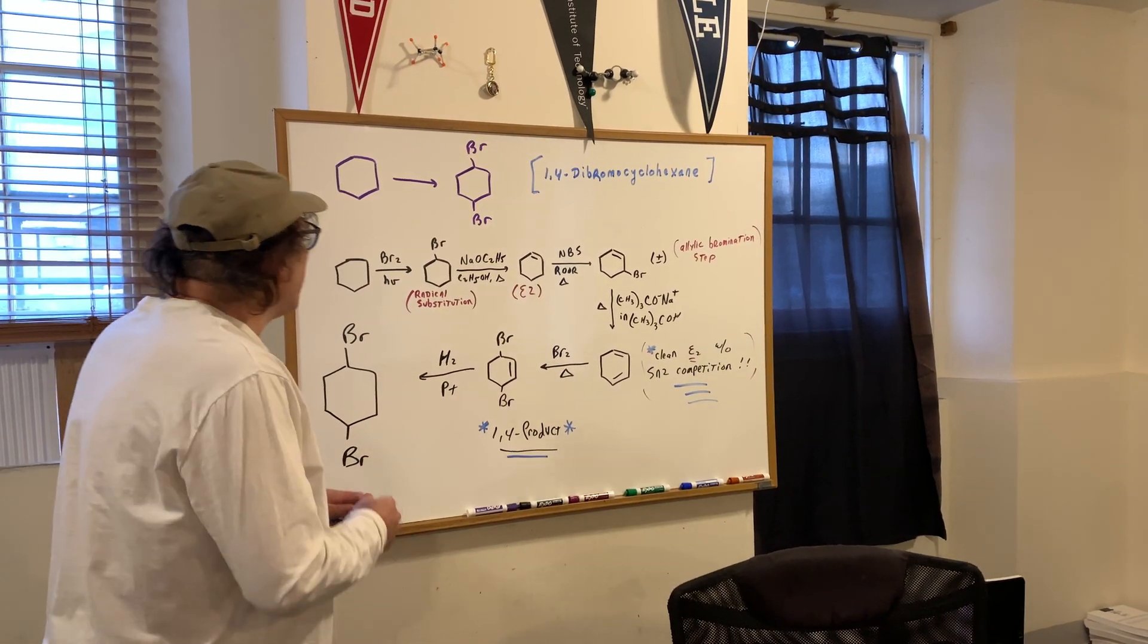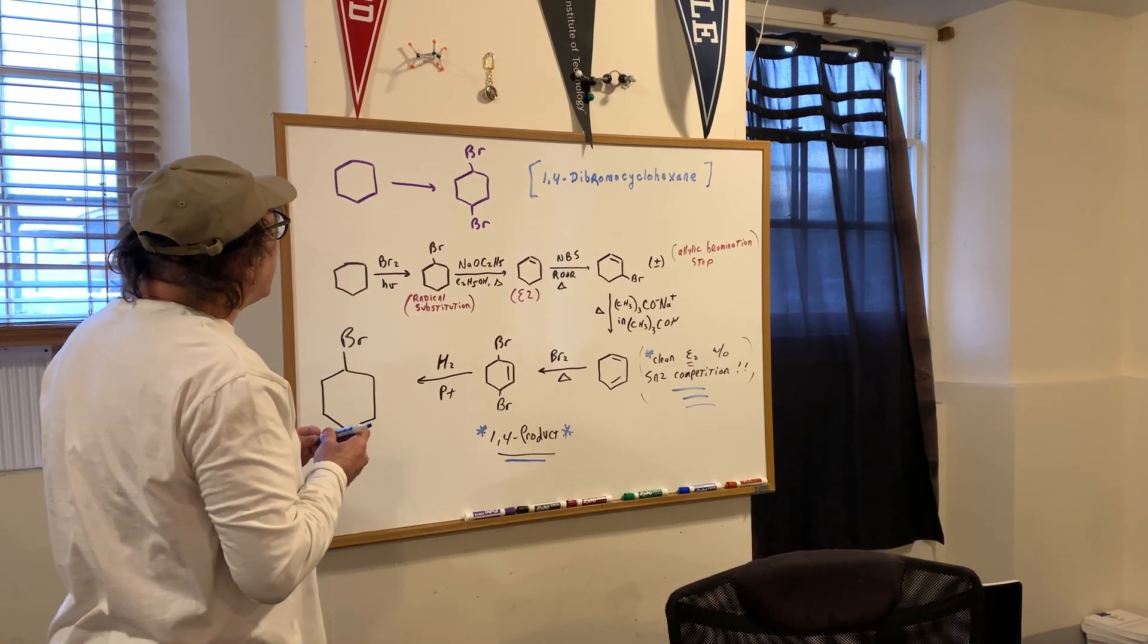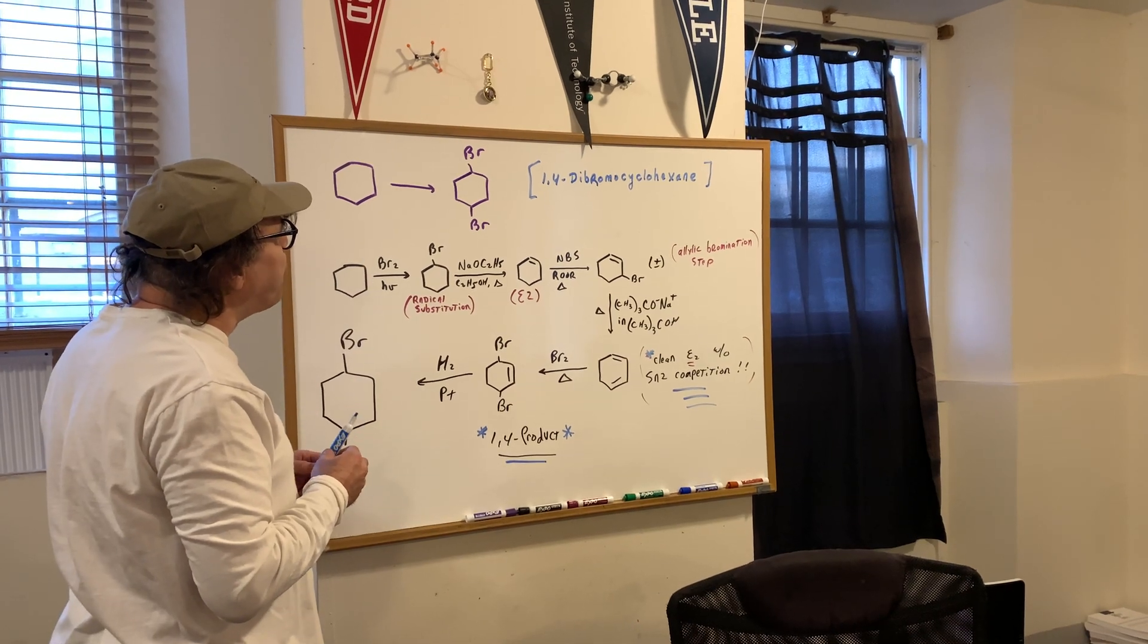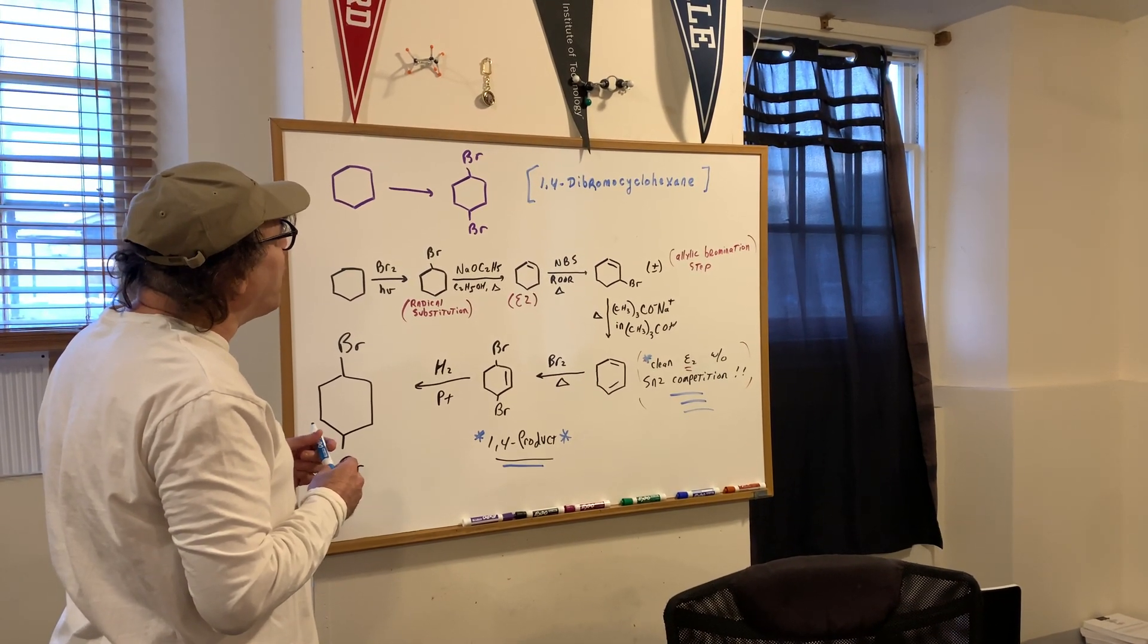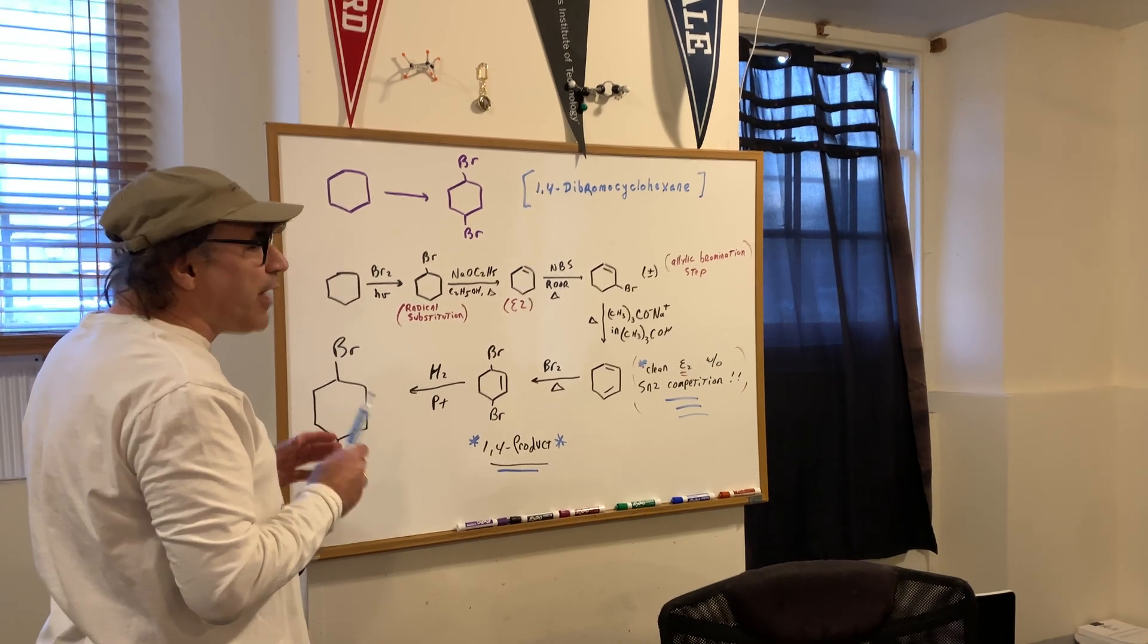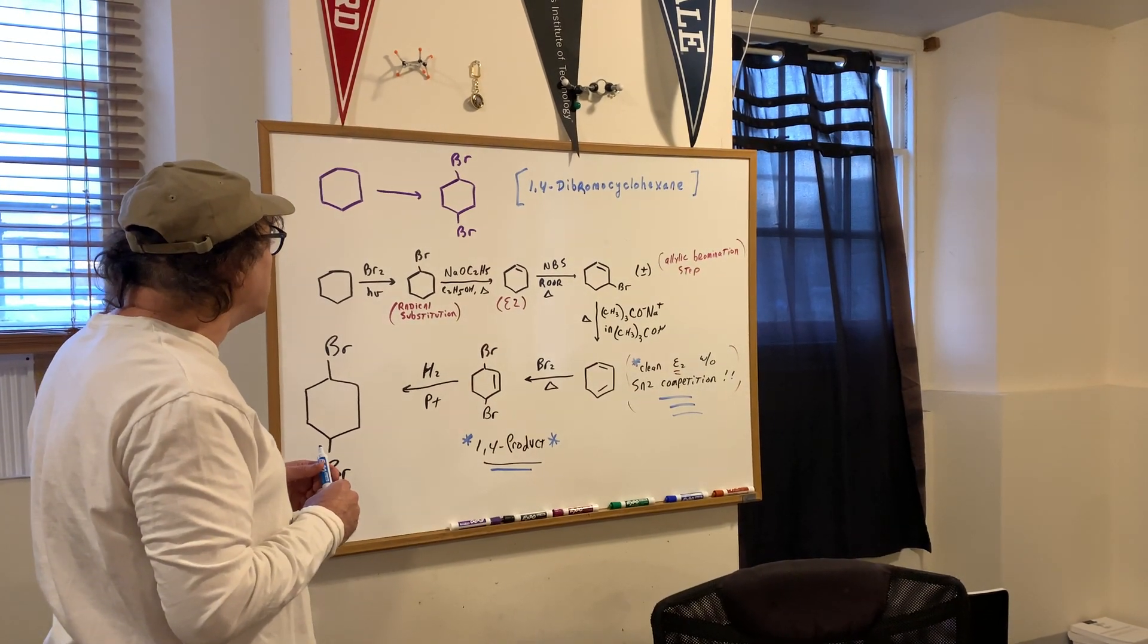If you take a look on the board, I want to go from cyclohexane into 1,4-dibromo-cyclohexane. So what we want to do is use a lot of the steps that we learned in the last two classes.